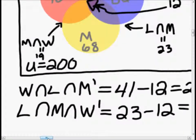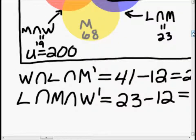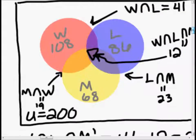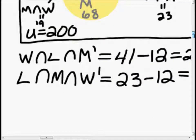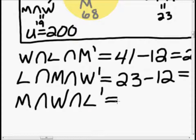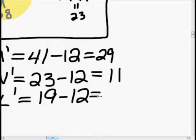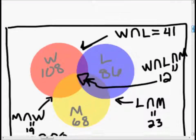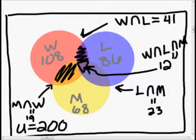So we're getting pretty far in this problem. How about the people who are married and in the west but are not in a large city? That would be this section right here. So that is married intersection west intersection not-large-city. That is 19 minus 12, which equals 7. So we've figured out some overlaps — this area, this area, and this area.